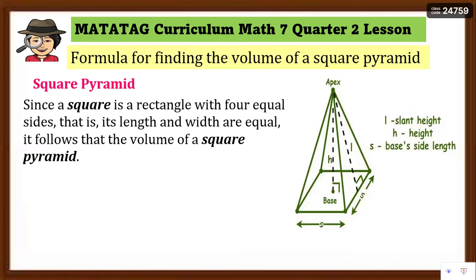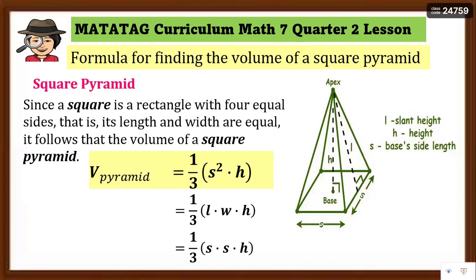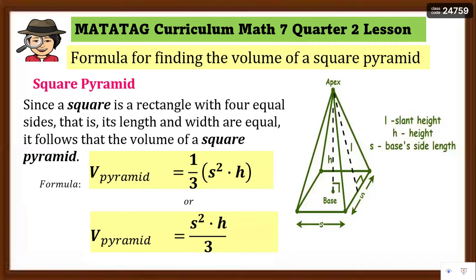Let's revisit the volume of a pyramid to see the connection. The volume is simply one-third of the area of the base times the height. The area of the base is length times width for a rectangle, multiplied by height, then divided by one-third. Since we are dealing with a square pyramid, length times width is replaced by side times side because it's a square base. That is why we have the formula to find the volume of square pyramids: one-third times side squared times height, or equivalently, side squared times height divided by 3.